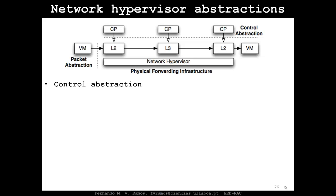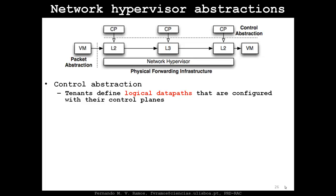The network hypervisor proposed in NVP offers two abstractions. The first is the control abstraction: tenants define logical data paths configured with their own control planes. For example, a tenant could define one L2 switch, a L3 router, and another L2 switch. The control plane includes a learning switch algorithm and an OSPF-based algorithm for the IP router. Tenants can define these logical data paths and insert the flow rules they want in their virtual switches to build a logical data path.